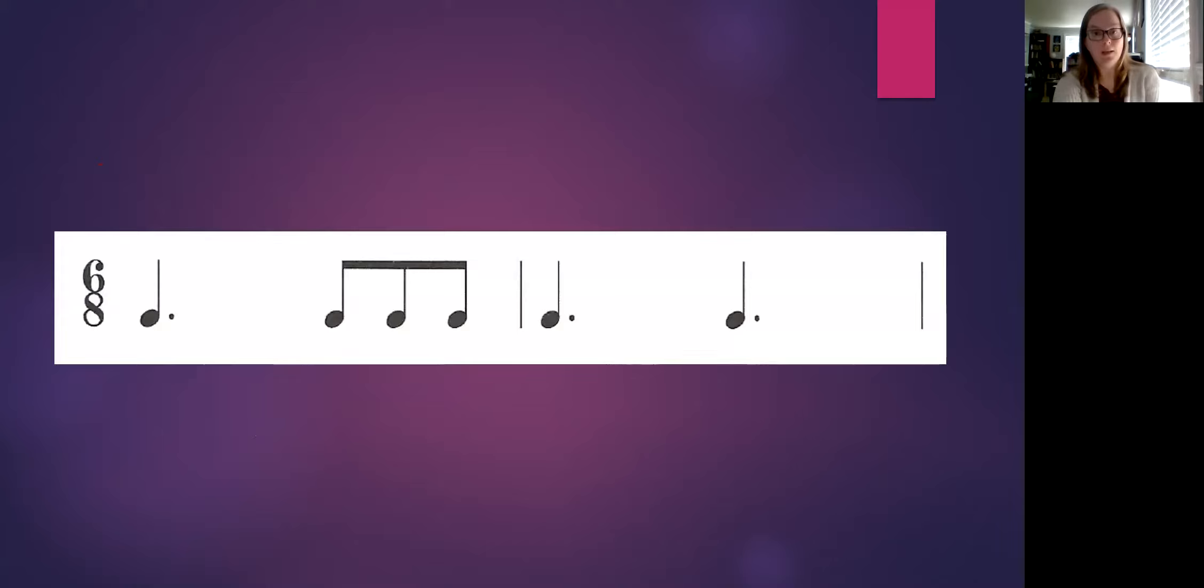So when we're in Compound Meter and we have Do, Do looks like this. It has a little dot with it called a dotted quarter note, and that's just telling us there's an extra part to the Do. It's carrying an extra part with it. And that's because our beat has three parts, Do-Da-D.